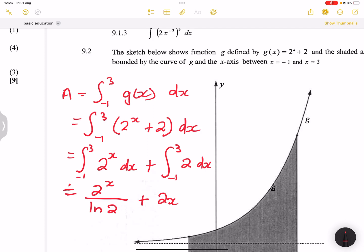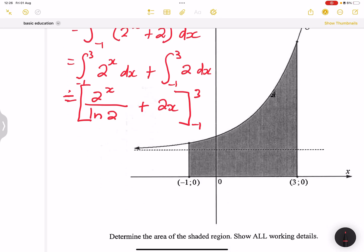And so that will give us the area between the two. But remember, we still need to substitute the values between negative 1 and 3. And that's what we're going to do next. We are simply going to say 2 raised to the exponent of 3 divided by ln of 2 plus 2 times 3. So I'm substituting where I see x. I'm going to substitute 3 minus,